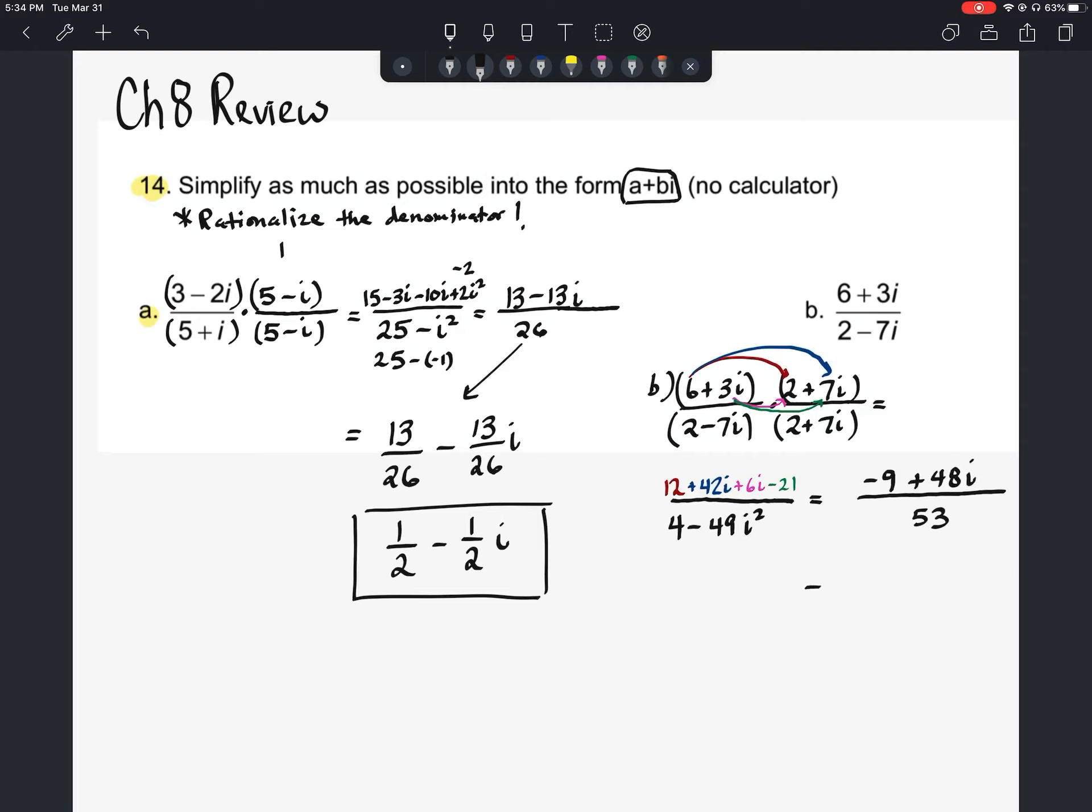And now we'll just take this and break this into two fractions, negative 9 over 53 plus 48 over 53i. And that is our final answer. This is problem number 14 from the chapter 8 review. Thanks for watching.